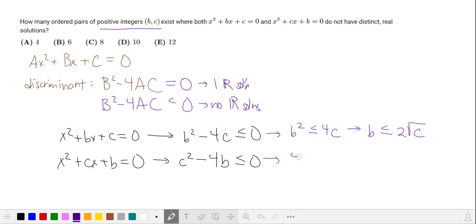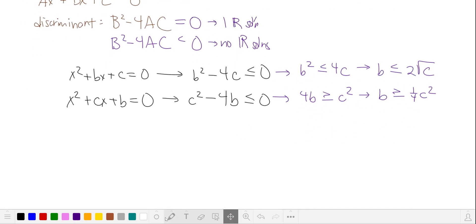So we can say that b is less than or equal to 2 times the square root of c. Likewise, here, if we solve for b, we have 4b is greater than or equal to c squared. So b is greater than or equal to 1 fourth c squared. Combining these two, we have that b is bound by 2 root c on top and 1 fourth c squared on the bottom.